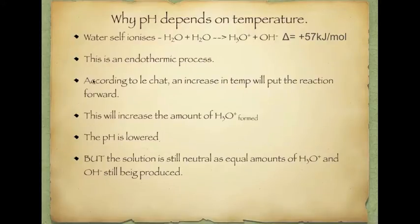And, being an endothermic process, according to Le Chatelier, an increase in temperature will put the reaction forward or push the reaction forward. We'll have a net increase in the forward reaction. What this means is the amount of hydronium will increase. So, we have an increase in the amount of hydronium formed. Increased temperature, forward reaction, we increase these two concentrations. Now, pH is directly linked to hydronium. So, therefore, if we have more hydronium, we lower the pH. The solution, though, is still considered neutral because we have equal amounts of hydronium and hydroxide still being produced. Because the forward reaction still produces one of each, it's still a neutral solution, but the pH is lowered.